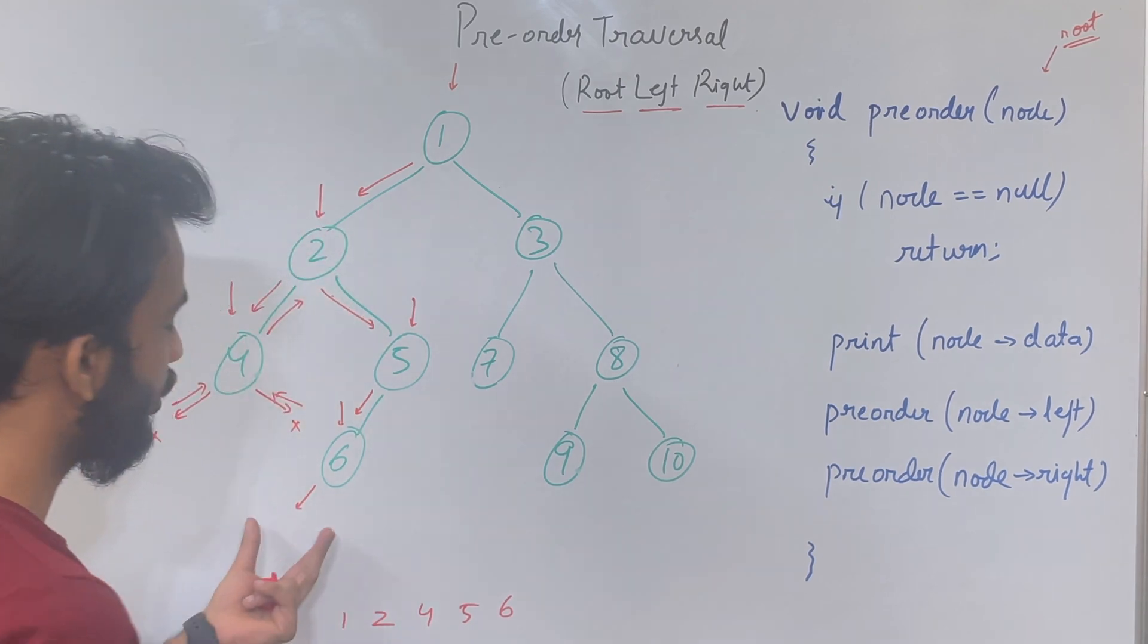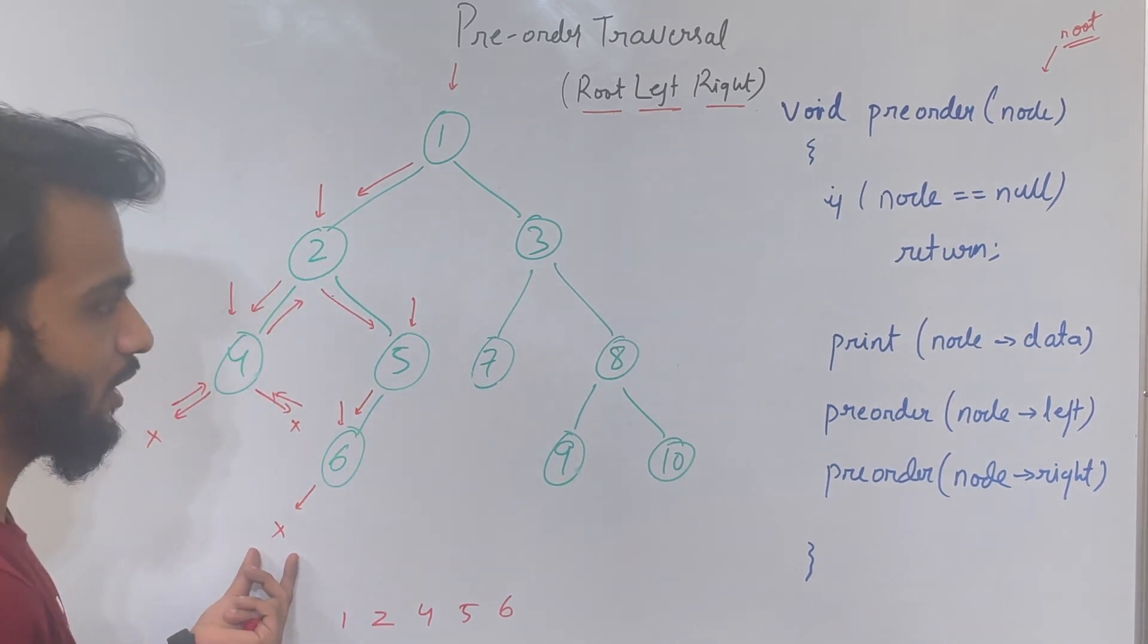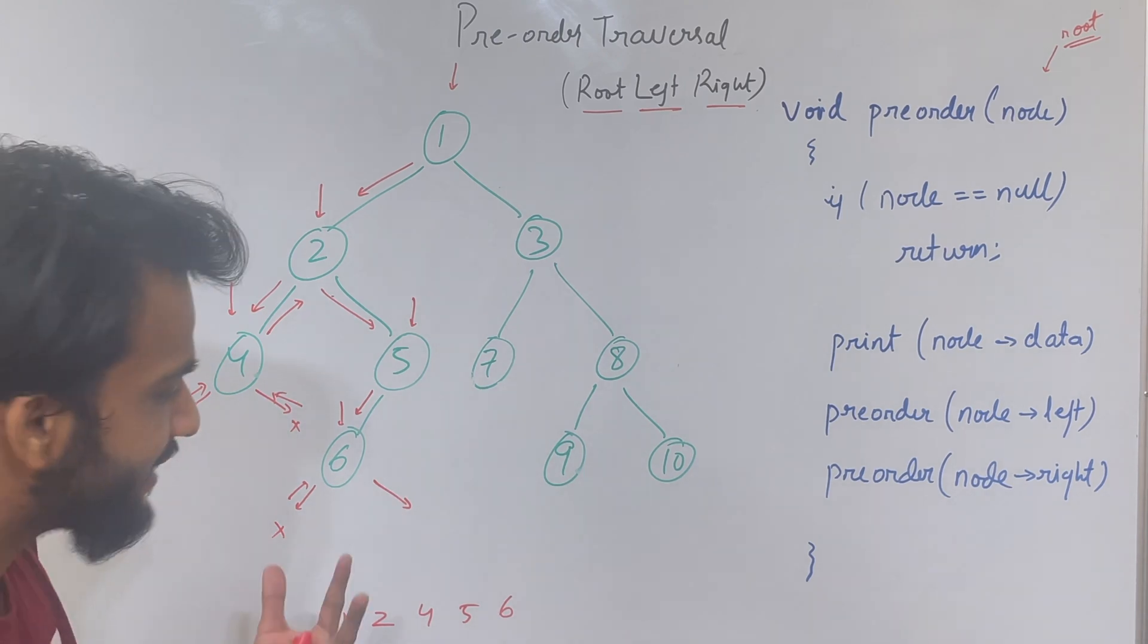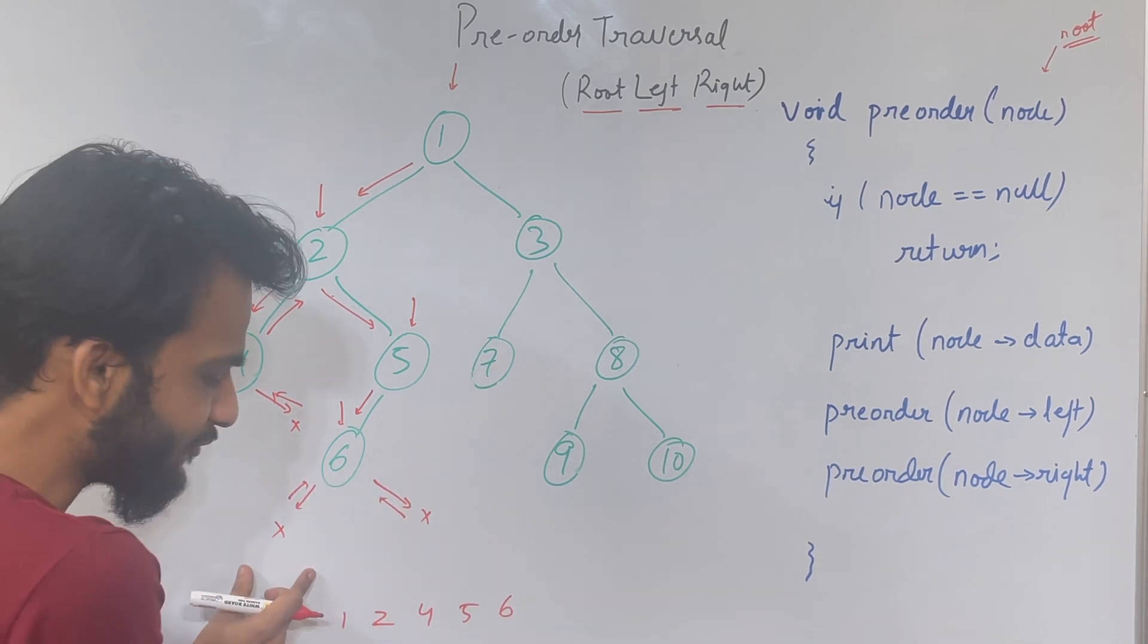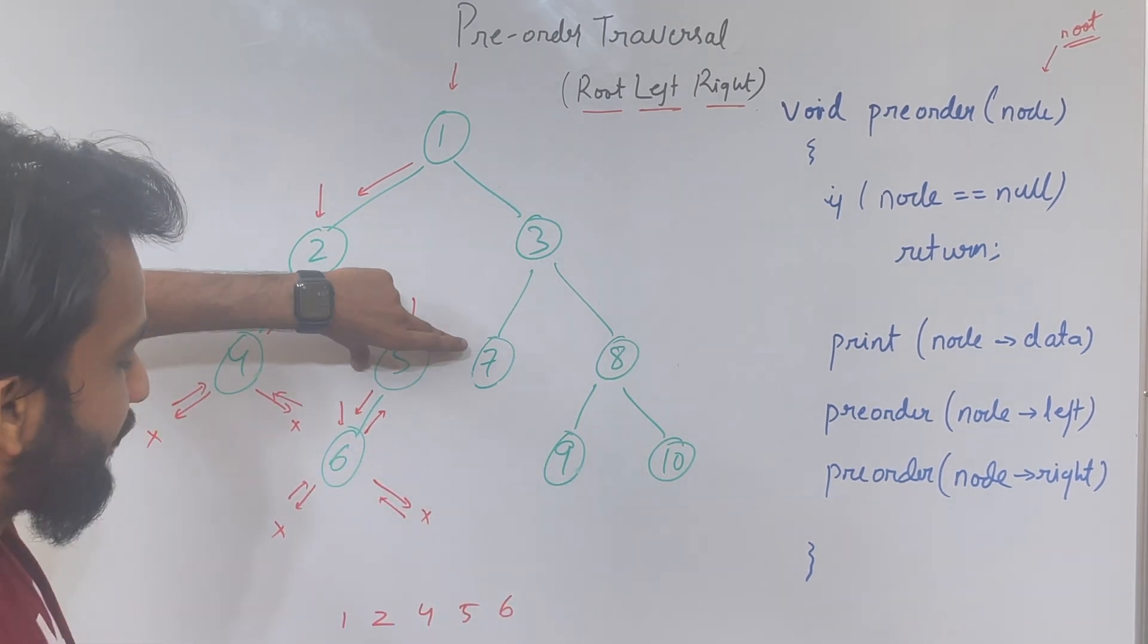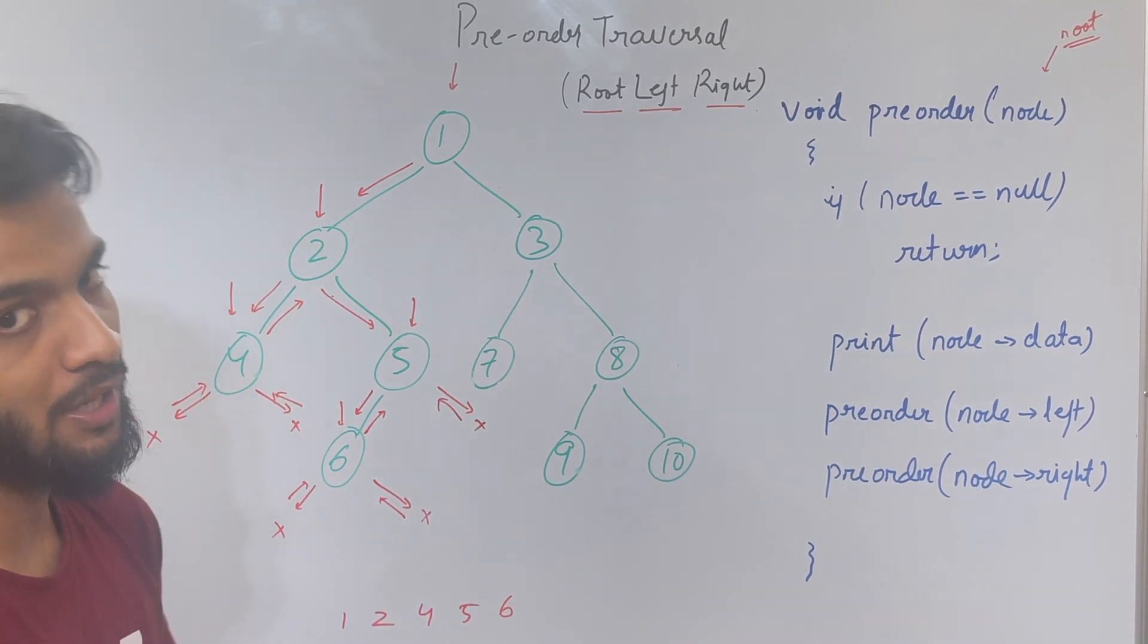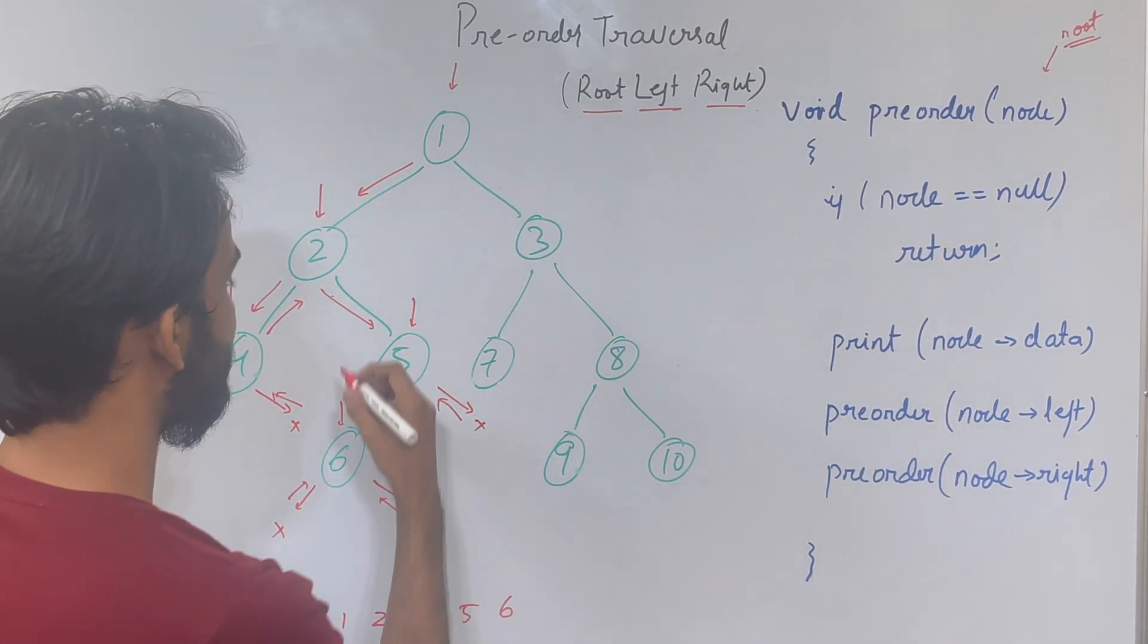Once we've printed 6, we go to the left of 6. After print, it's the left. We find null, so we return. For node 6, printing is done, left is done. Time to go to the right. Right is null, so we return. For node 6, print, left, right is done, so 6 is over and we go back. For node 5, print is done, left is done, right is null, so we go back. For node 5, print, left, right—everything is completed.